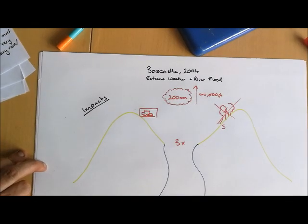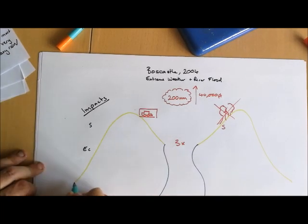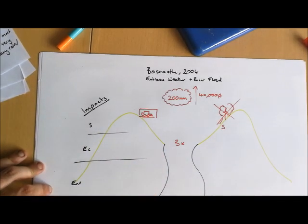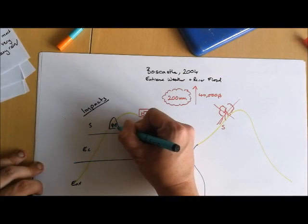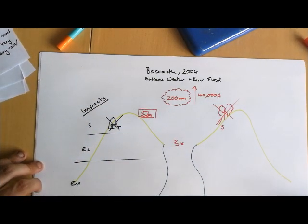So if we look at the impacts of Boscastle floods, we can basically break those down into social, economic, and environmental impacts. Socially, we were actually very fortunate in Boscastle. There were no deaths. Due to the quick and very highly effective emergency response directed by the British military and the British Coast Guard, people were airlifted to safety before any deaths could occur.